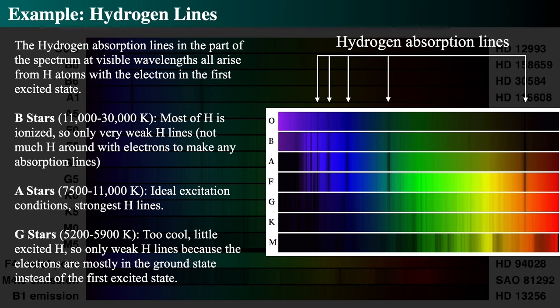As some examples: B stars have hydrogen that is almost all completely ionized, so you get very weak hydrogen lines. A stars have the maximum excitation temperature, so hydrogen electrons get to first, second, and third excited states, drop back down, and re-radiate light in other directions. G stars are too cool — there aren't enough energetic photons to excite hydrogen out of the ground state into excited states where they can absorb at that frequency. That's the reason for the varying hydrogen line strengths.